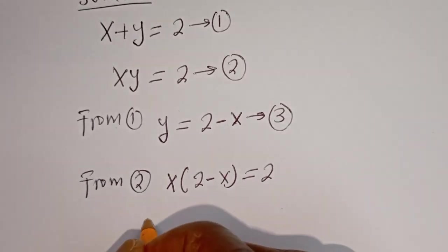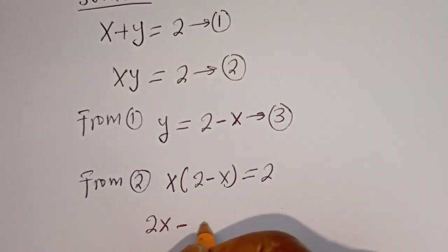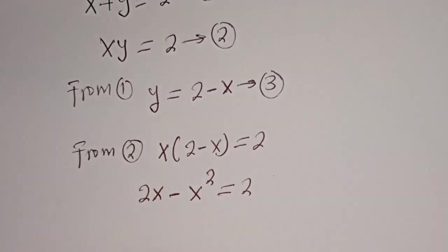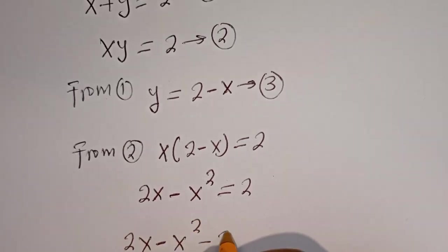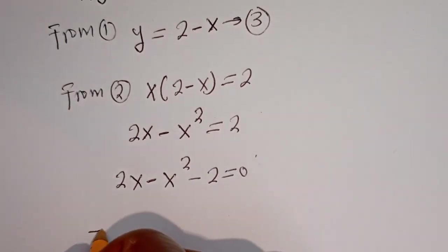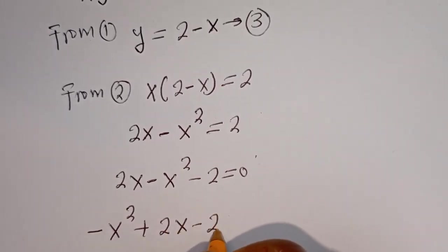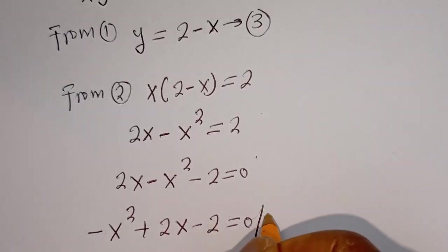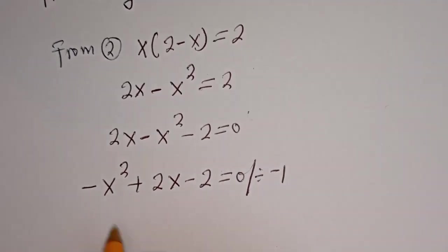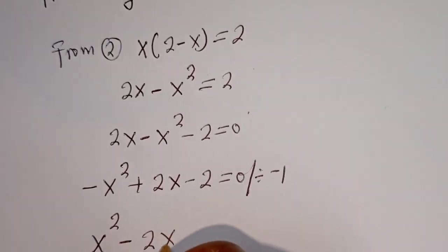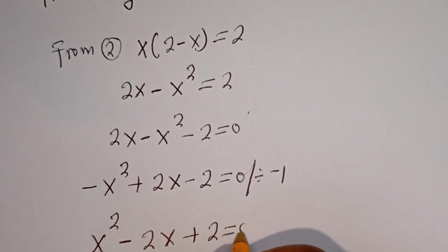We can open the brackets: 2s minus s squared is equal to 2. Now we have 2s minus s squared minus 2 is equal to 0. Let's put it in standard form: minus s squared plus 2s minus 2 is equal to 0. Let's divide all through by minus 1, and this gives s squared minus 2s plus 2 is equal to 0.